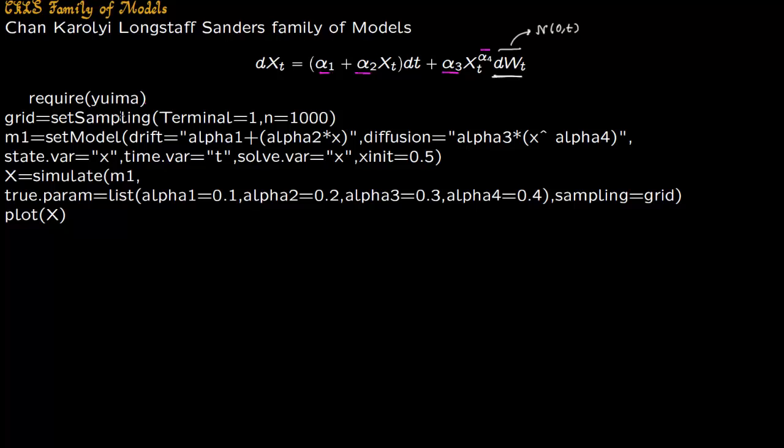So let us see this in our code. You require this package. I'm going to set a grid here. Generally, if you do not set the grid, your time would be one by a hundred. So here I'm setting the grid as terminal is one and n is thousand. The time now is always this terminal divided by this n. So terminal divided by n is your time. So now in this case it's one over one thousand.